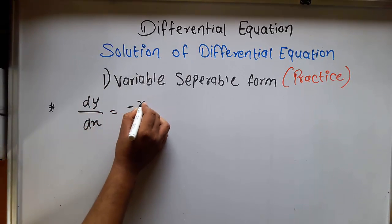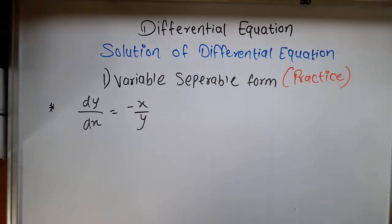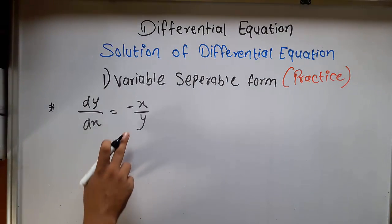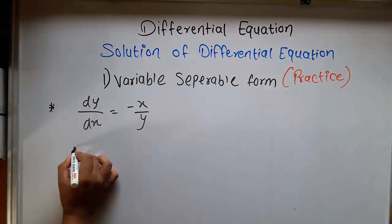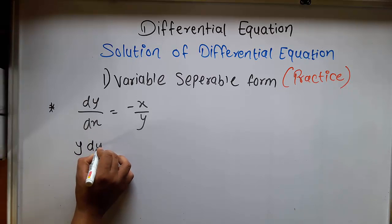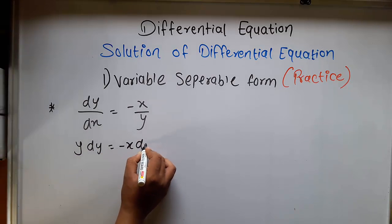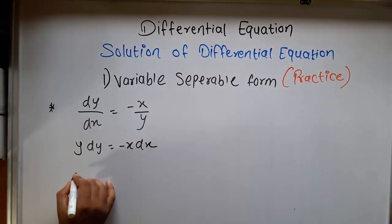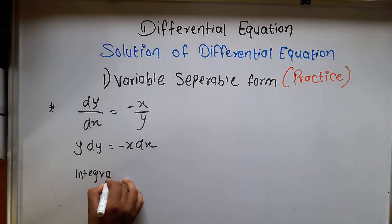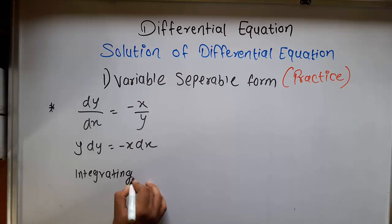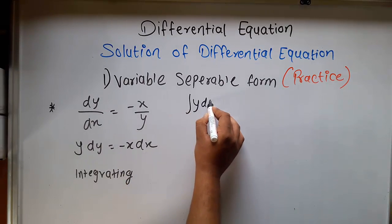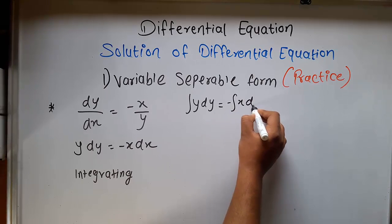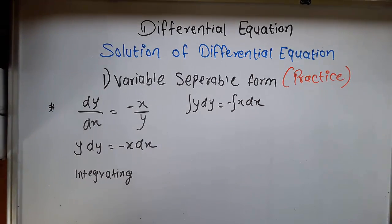Next problem: dy/dx equal to minus x by y. In this equation, this will be pretty simple. We transpose y to this side and dx to this side. So the equation becomes y dy equal to minus x dx. Now integrating, it forms the integral of y dy equal to the integral of minus x dx.